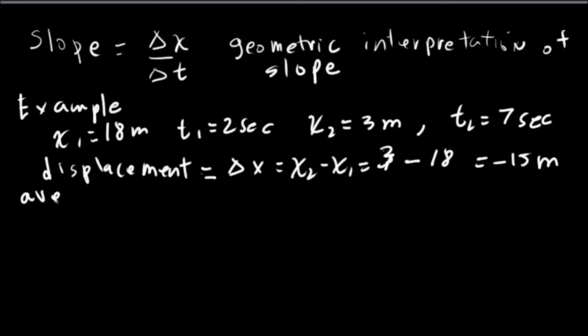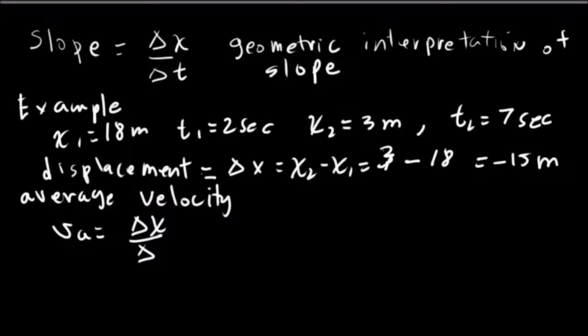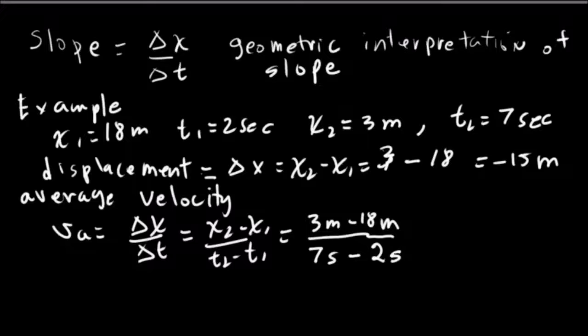Let's see what our average velocity is. So our V average, we define that as equal to delta x, change in position, divided by the change in time. Equal to x2 minus x1 divided by t2 minus t1. So that's 3 meters minus 18 meters, or displacement. And then we had 7 seconds was our t2 minus 2 was our t1. So that's minus 15 meters divided by 5 seconds. That's going to give us minus 3 meters per second. So that's going to be our average velocity.